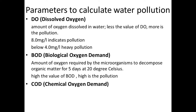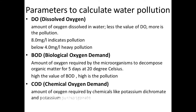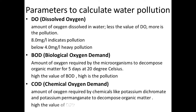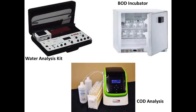COD — chemical oxygen demand — accounts for the amount of oxygen required by chemicals like potassium dichromate and potassium permanganate to decompose organic matter. High the value of COD, high is the level of pollution. The value of COD is always higher than BOD because BOD measures only organic pollution in water, whereas COD measures both organic as well as inorganic pollution in water.